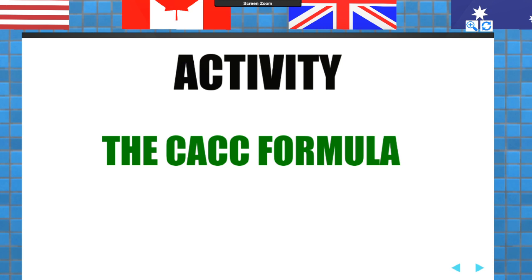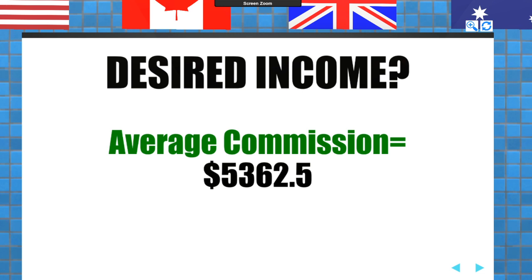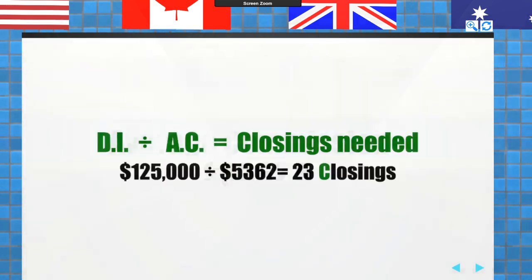The CACC formula: contacts, appointments, contracts, and closings. I'm going to give you my formula to make $125,000 in commissions. Number one, you need to know your numbers backwards and forwards. If your average commission is $5,362 per home and your desired income is $125,000, you need 23 closings to make $125,000. C-A-C-C: contacts, appointments, contracts, closings.